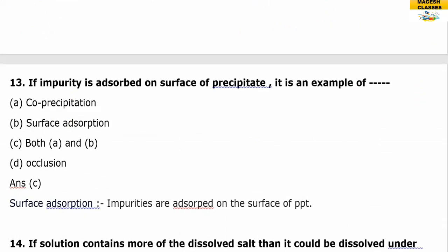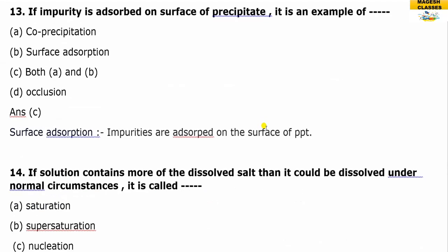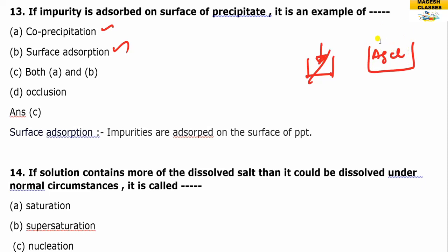If impurity is adsorbed on the surface of the precipitate, it is an example of co-precipitation and surface adsorption. For example, when silver chloride is precipitated, some impurities present get adsorbed on the surface of the precipitate. So the answer is C — impurities are adsorbed on the surface of the precipitate.